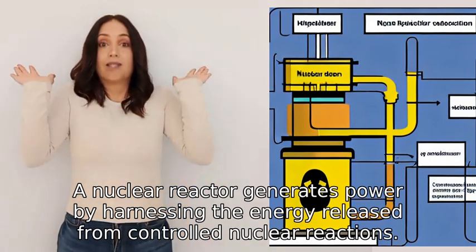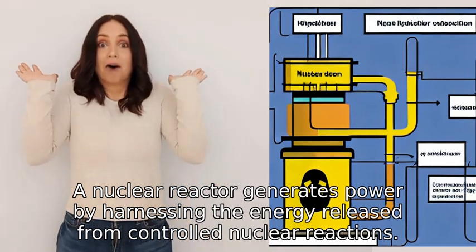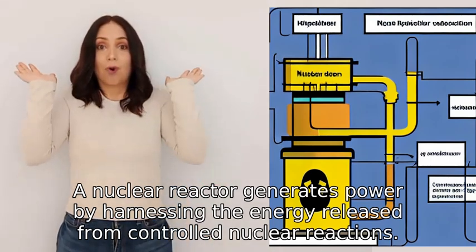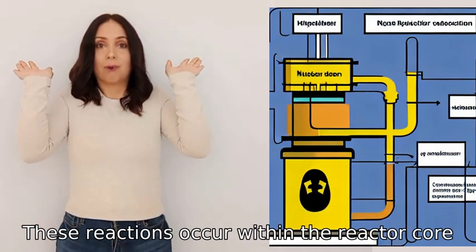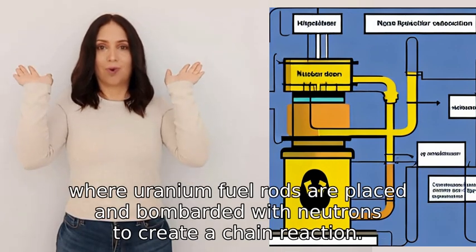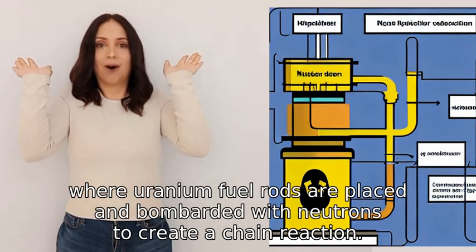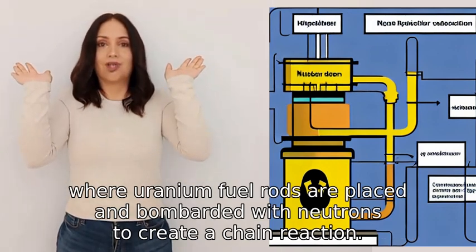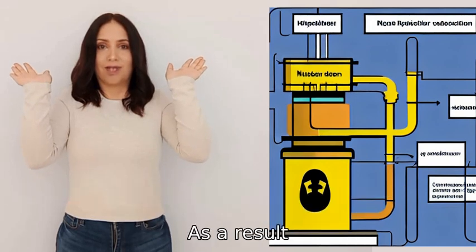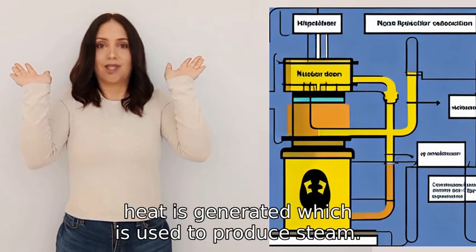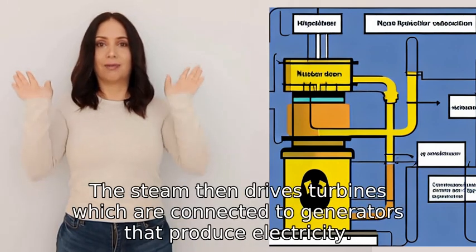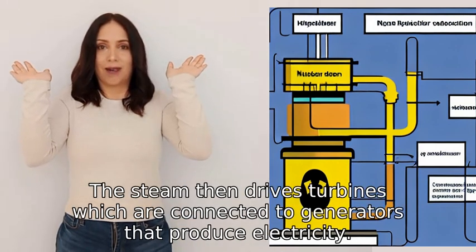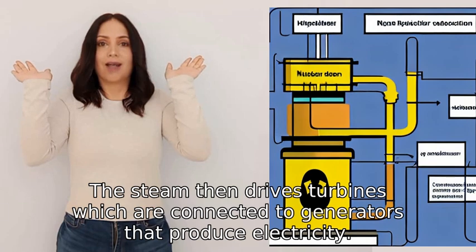A nuclear reactor generates power by harnessing the energy released from controlled nuclear reactions. These reactions occur within the reactor core, where uranium fuel rods are placed and bombarded with neutrons to create a chain reaction. As a result, heat is generated, which is used to produce steam. The steam then drives turbines connected to generators that produce electricity.